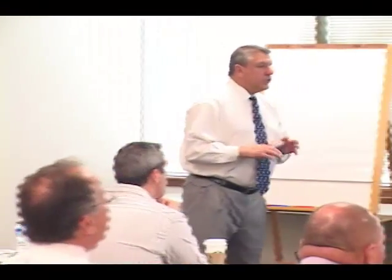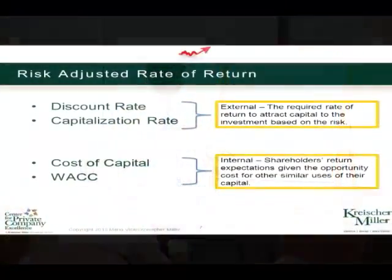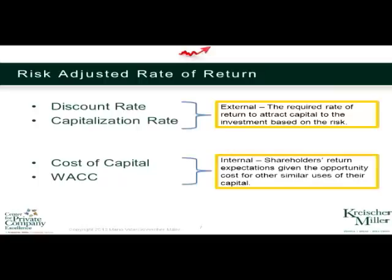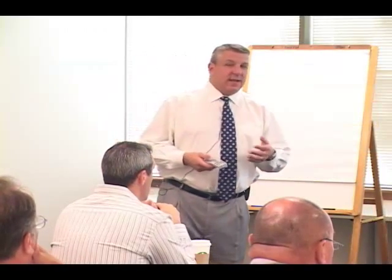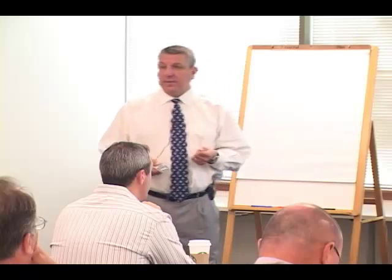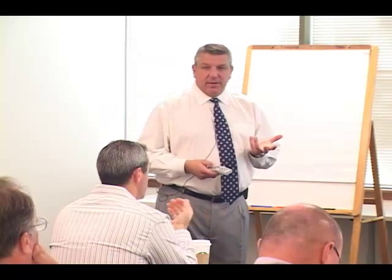A couple of terms to cover, because we're going to use these throughout the presentation. These get used a lot — they really mean the same thing, but they're used in different places. You'll hear things about a discount rate; that's usually an external rate of return. It's the required rate to attract capital to an investment. An outside party valuing your business has to determine what the risk is associated with the investment. That's often referred to as a discount rate or a capitalization rate. Outside third parties that do this a lot have already established — not so much based on your business — what their return requirements are at their company for what kind of return on capital they'll be willing to pay.